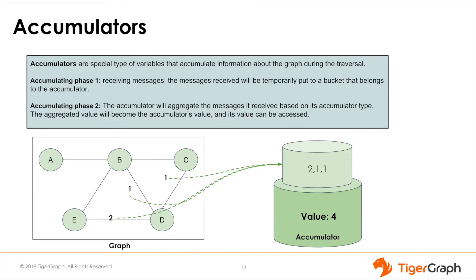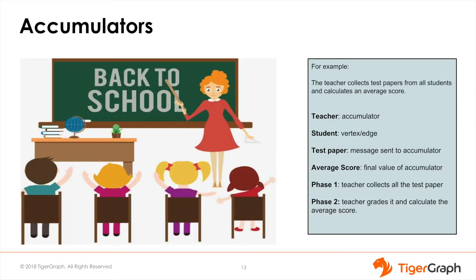The aggregated value will become the accumulator's value and then the value can be accessed. Let's think of this using a real-life example. Imagine taking a test and handing your papers to the teacher. The teacher then takes the average of all the scores and writes that value on the board. In this example, the teacher is the accumulator, the students are the vertices or edges, the test papers are the messages, and the average score is the final value of the accumulator. In phase one, while the teacher is collecting all the test papers, the accumulator value is not yet accessible. In phase two, the teacher grades the papers and calculates the average score, allowing access to the accumulator's value.